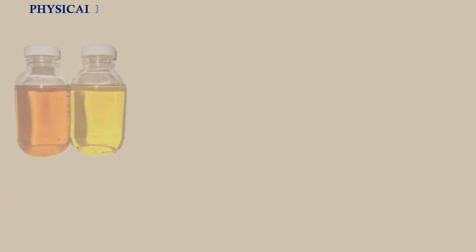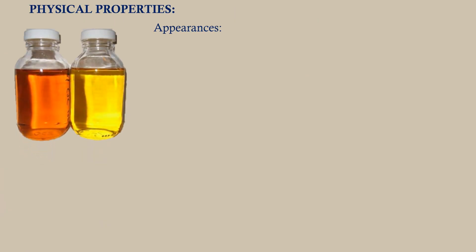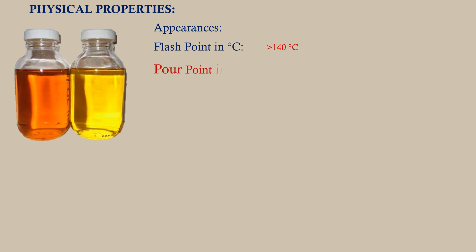Physical properties — Appearance: the transformer oil will be clean, transparent, and free from suspended matter or sediments, and free from acidic smell. Flash point in degree centigrade: a high flash point of transformer oil, more than 140 degrees centigrade, is desirable to minimize the chance of fire hazards.